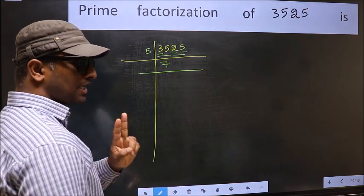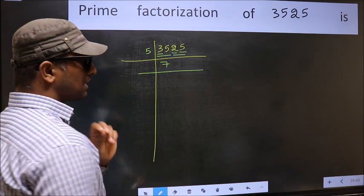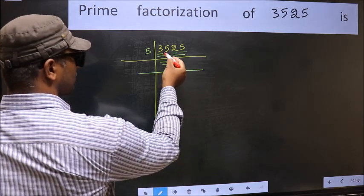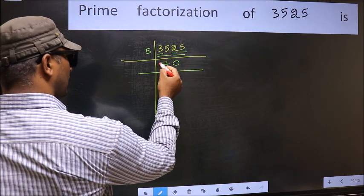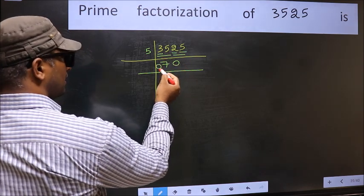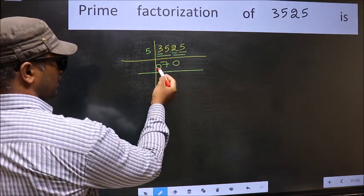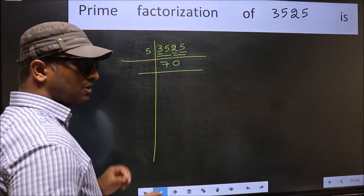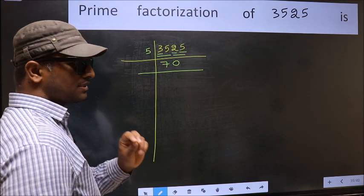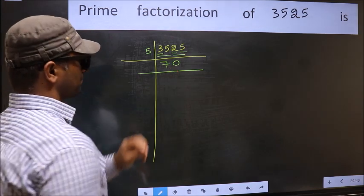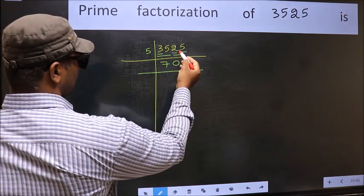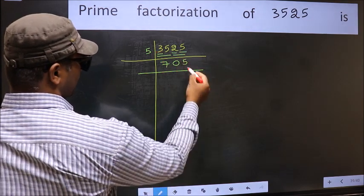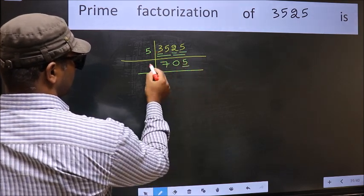Remember, whenever you are taking 2 numbers, compulsorily put 0. Even over here we had taken 2 numbers, but 0 at the start does not count, so no need to write 0 at the start. Anywhere else you are taking 2 numbers, then 0 is a must. Now 25 — when do we get 25 in the 5 table? 5 times 5 is 25. The last digit is 5, so take 5.